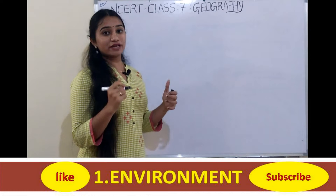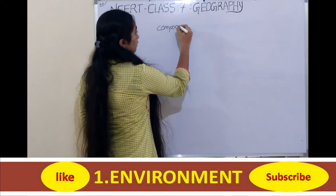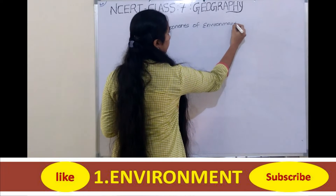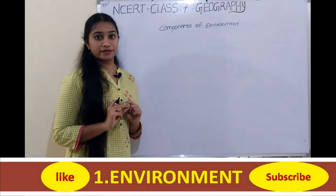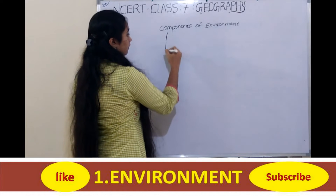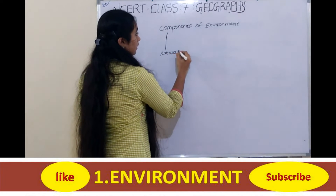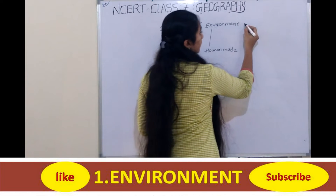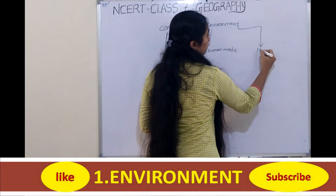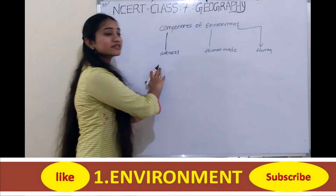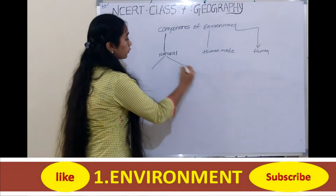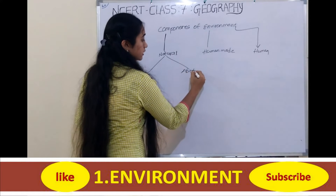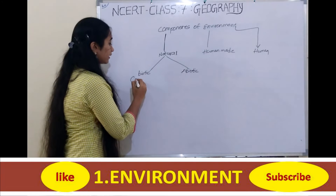Now let's move on to the components of environment. There are three components of the environment: one is natural, the second one is human-made, and the third one is human. Natural environment is divided into two types: one is biotic and the second one is abiotic. Biotic means nothing but living organisms.